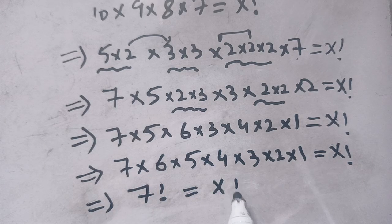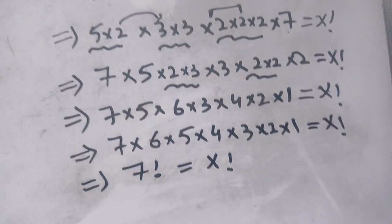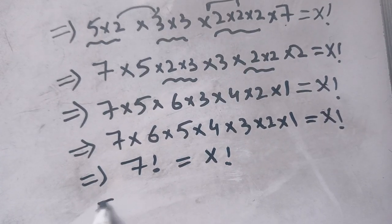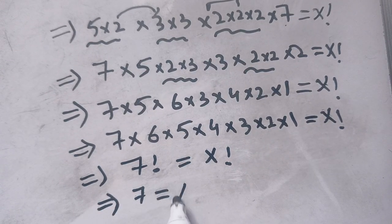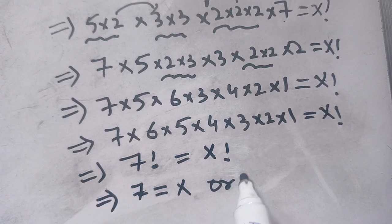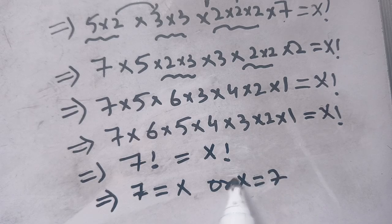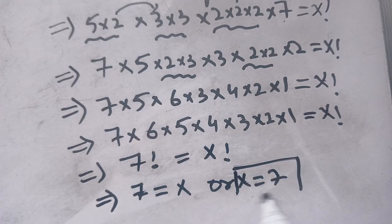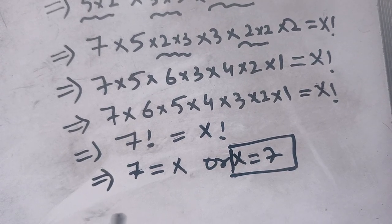This implies 7! = x!, which implies x = 7. Thus the value of x is equal to 7, which satisfies our given factorial problem.